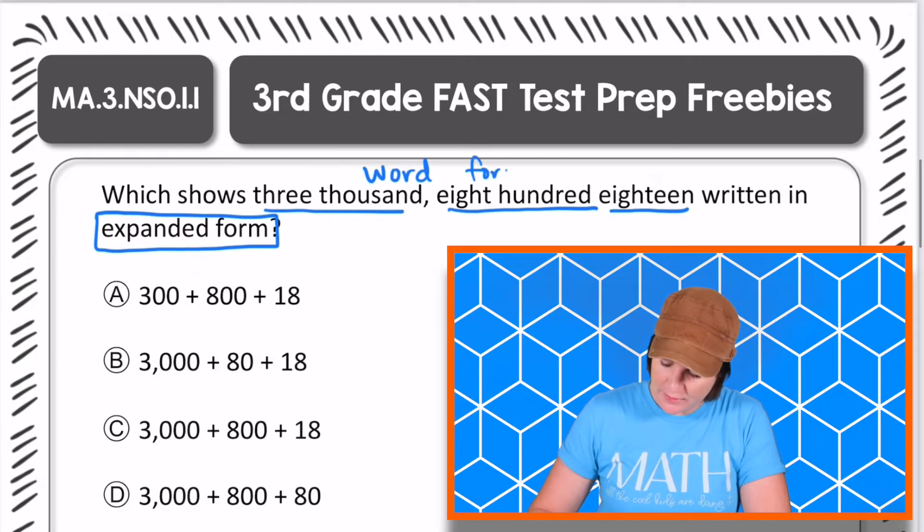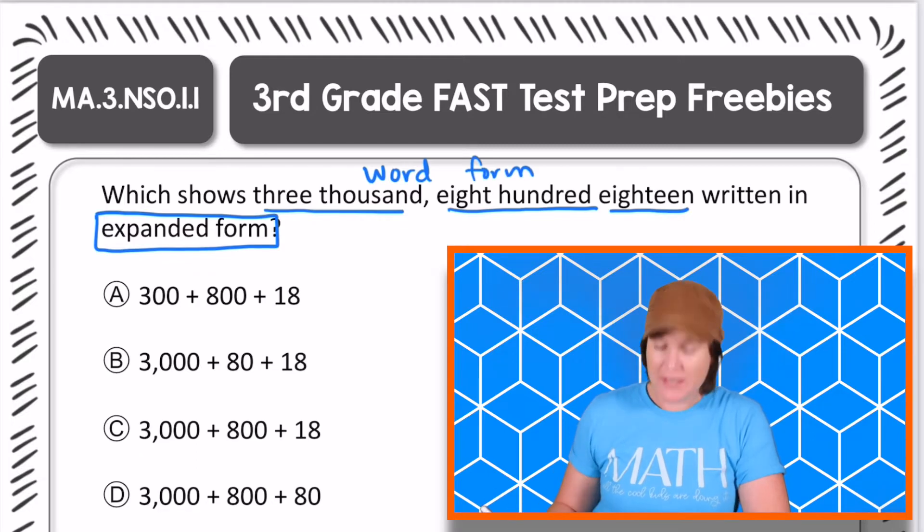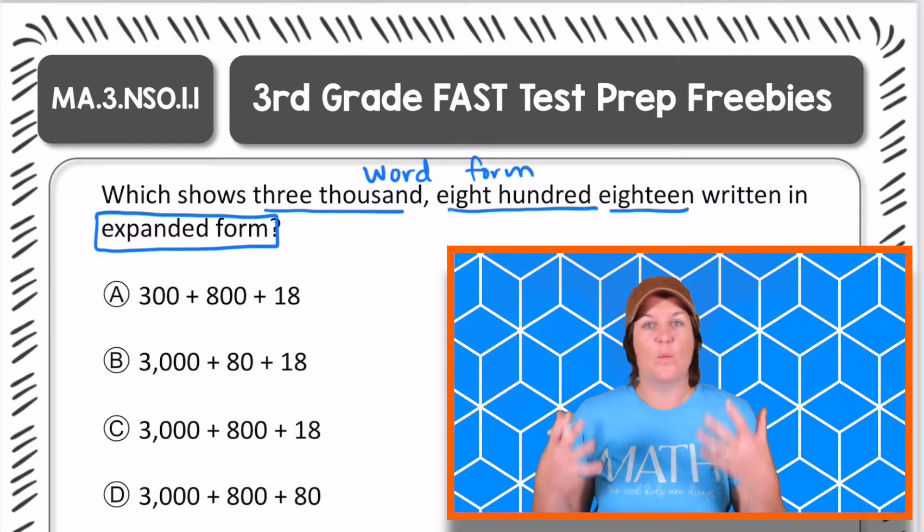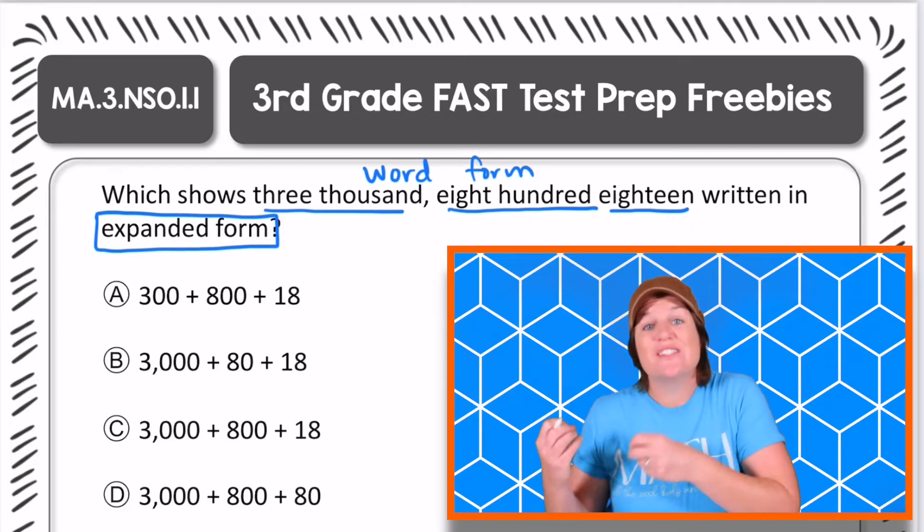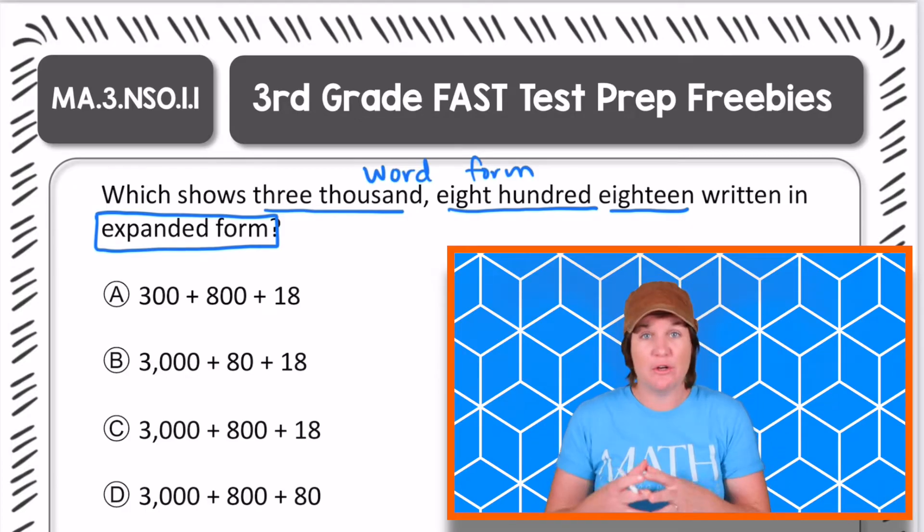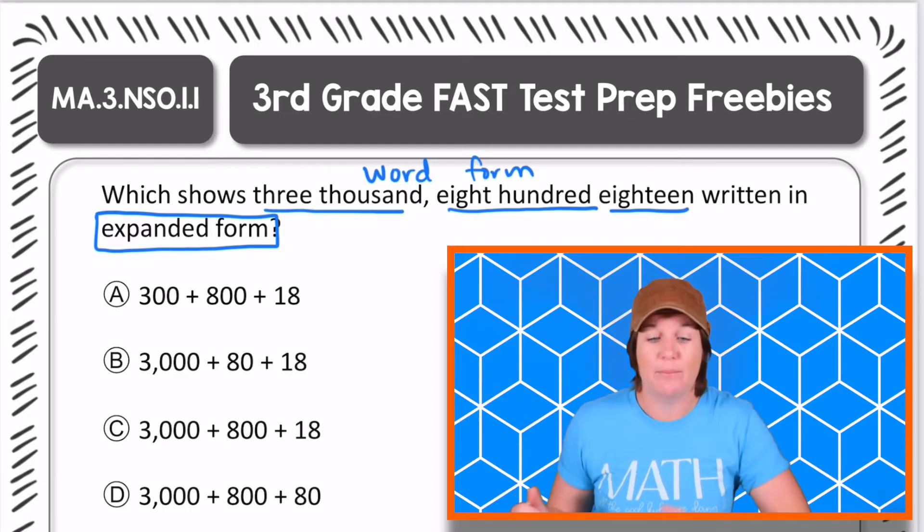We need to write it in expanded form and you can see choices A, B, C, and D kind of imitate what expanded form looks like. The first step I'm going to take with this is to take it from word form and put it into standard form first. Standard form is the regular way that we write numbers.